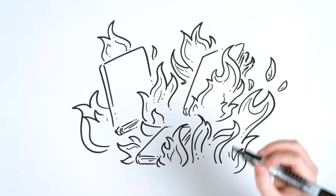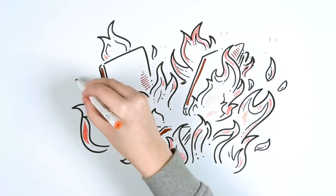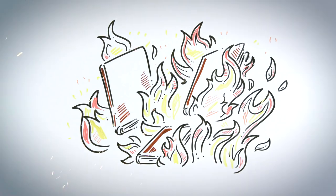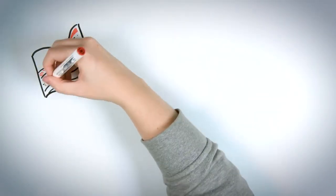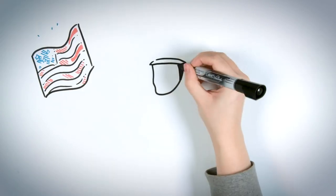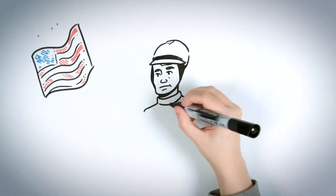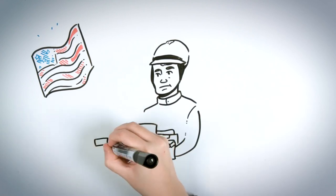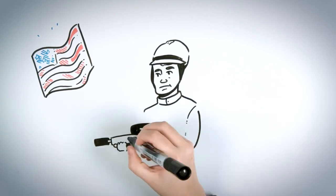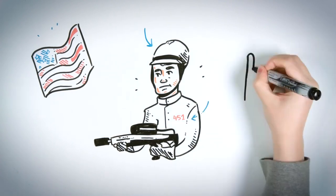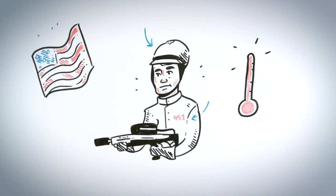This is our summary of Ray Bradbury's Fahrenheit 451. In a futuristic society in the United States, Montag is a firefighter who starts fires to burn books in the houses where they are found, as they are forbidden. He wears a black uniform and a helmet with the number 451, the temperature at which paper burns.